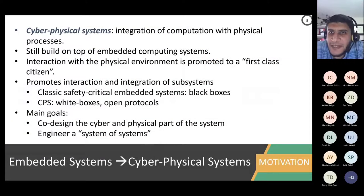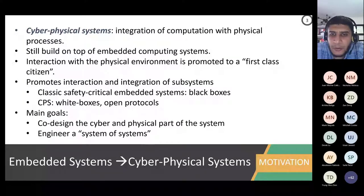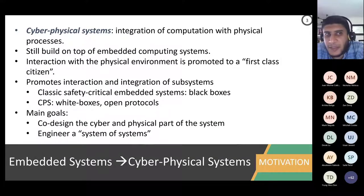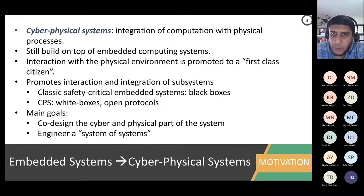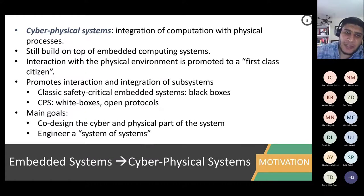In all these examples, embedded systems have one additional very important feature: interacting with the physical world. That is why you might hear people call these cyber-physical systems. There are two components: a cyber component, which is the computer or processing element, and sensors and actuators that deal with the physical world — collect data from it, sense it, process it, and then modify it. That is why it is called a cyber-physical system.